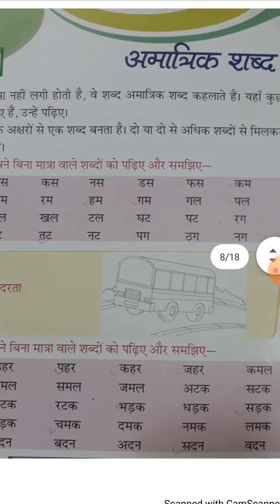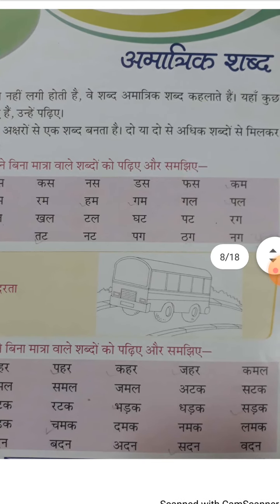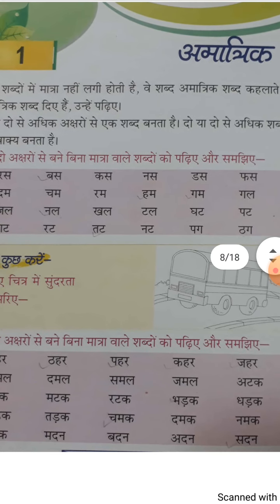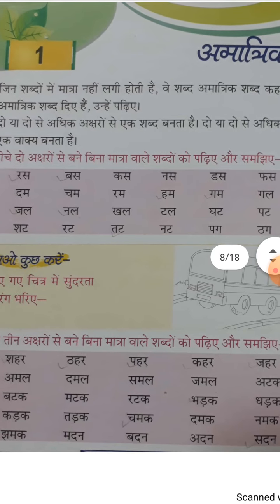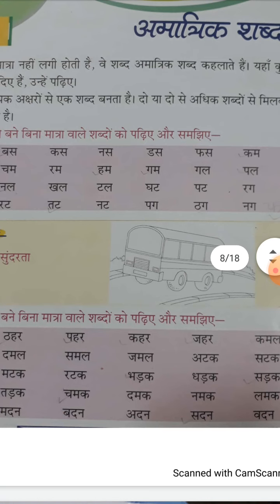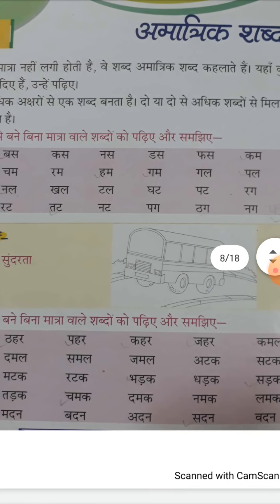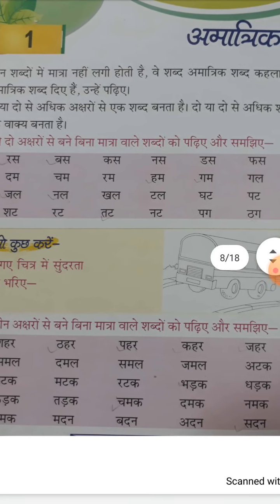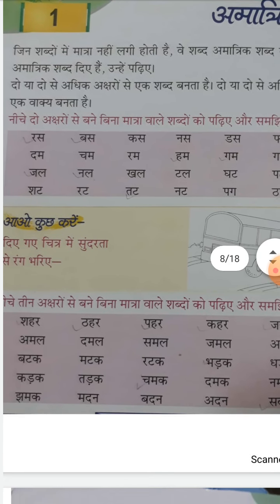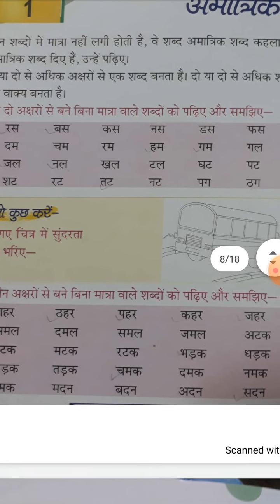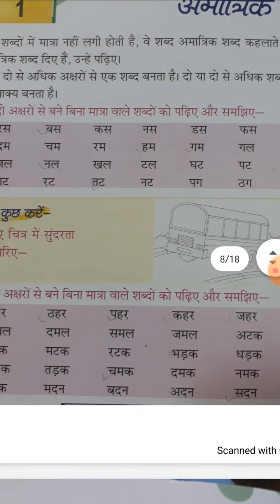गामागम, गालागल, पालापल, जालाजल, नालाणल, खालाखल, टालाटल। ये मिलते जुलते शब्द होते हैं — घट, घाटा घट, पाटा पट, घटाट, रागारग, नागानग, शाटा शट, राटा रट, ताटा तट, नाटा नट, पागा पग, ठागा ठग।